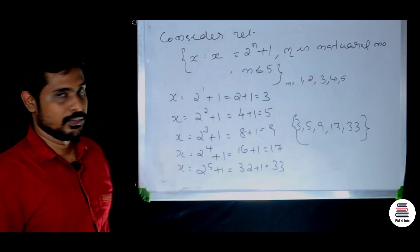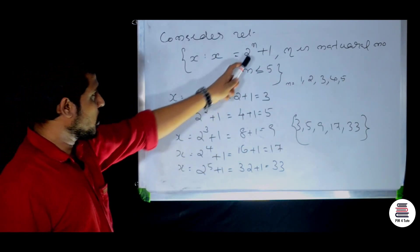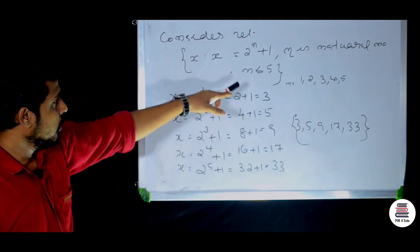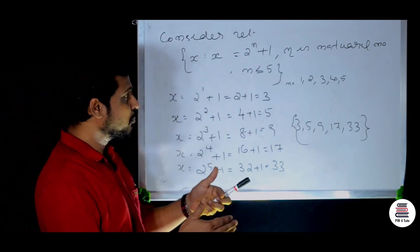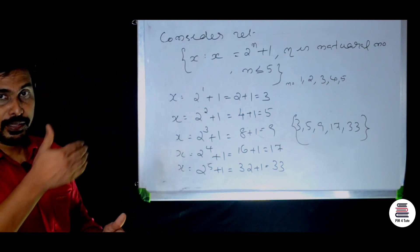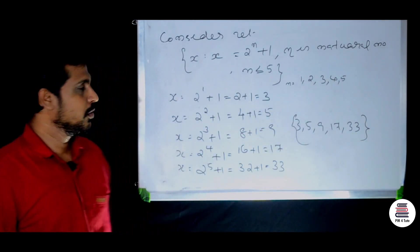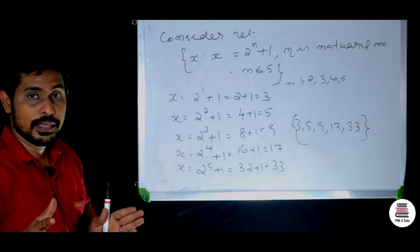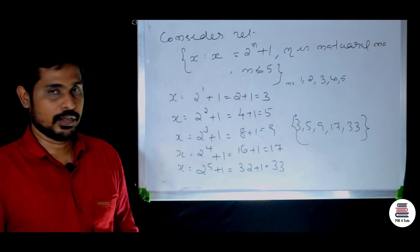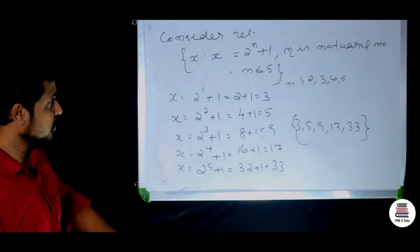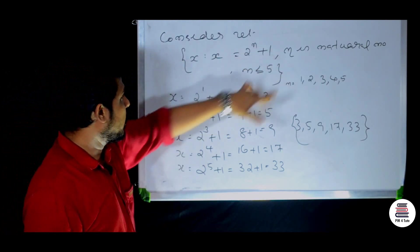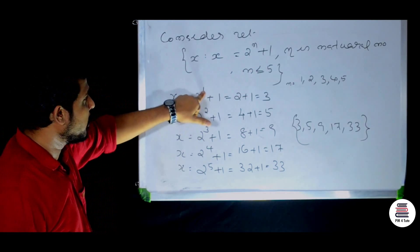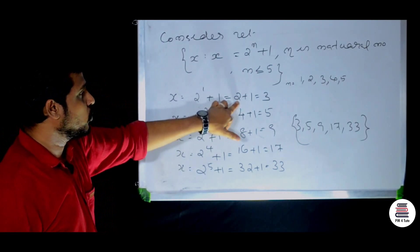Where n is a natural number and n is less than or equal to 5. For example, x = 2 raised to n plus 1, where n is a natural number. When n equals 1: x = 2 raised to 1 plus 1 = 3. When n equals 2: x = 2 raised to 2 plus 1 = 5.